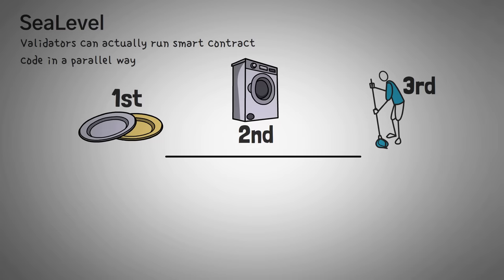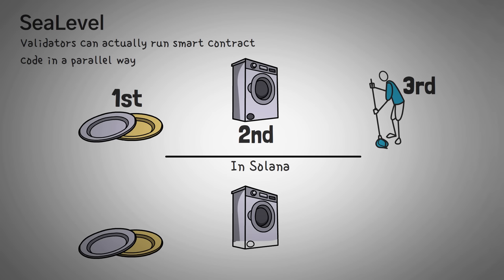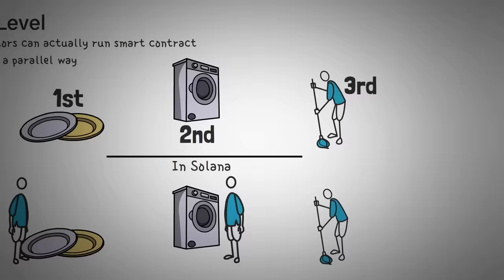In terms of Solana, the word parallel means you can do them all at the same time, so it's like if you could make two more copies of yourself and actually do the dishes, switch the laundry, and sweep the floor all at the same time. That is essentially what Solana can do, processing their smart contracts.